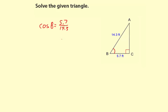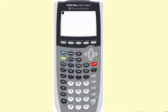If I want to find the measure of angle B, I need to take the inverse cosine of this 5.7 divided by 14.3. Okay, so let me get the calculator. Okay, 66.5 degrees.